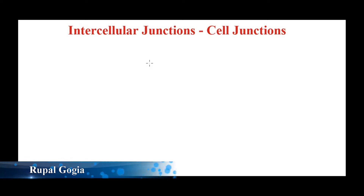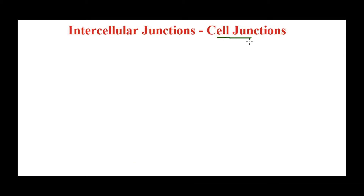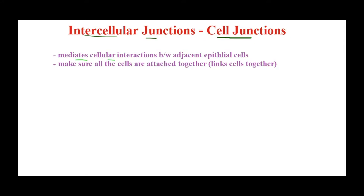Welcome back. Today we are talking about cell junctions — to be very specific, intercellular junctions. These are the junctions found between epithelial cells. We know that epithelial cells are all linked and connected to each other and also to their matrix. Intercellular junctions are found between adjacent epithelial cells and they help in holding these cells together.